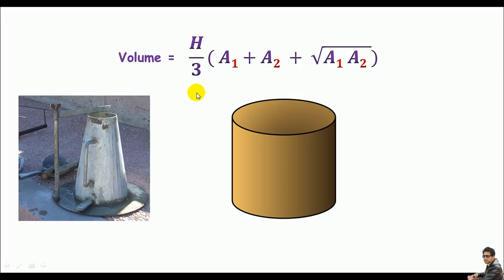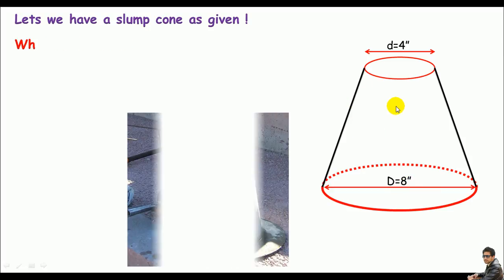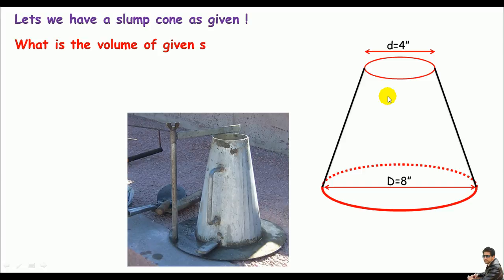Let's say we have a slumped cone as given. The top of the slumped cone is 4 inches and the bottom, which is also a circular shape, is 8 inches. We are asked to determine the volume of the given slumped cone if the height is 12 inches.